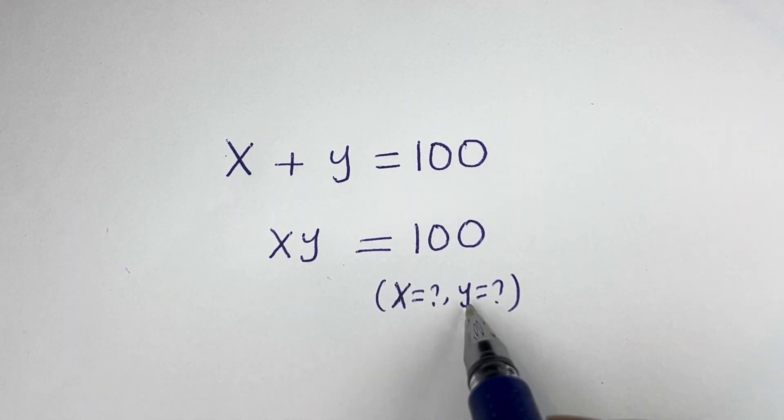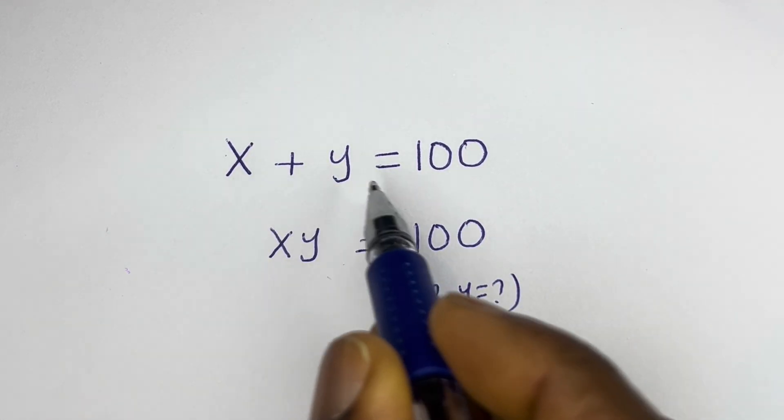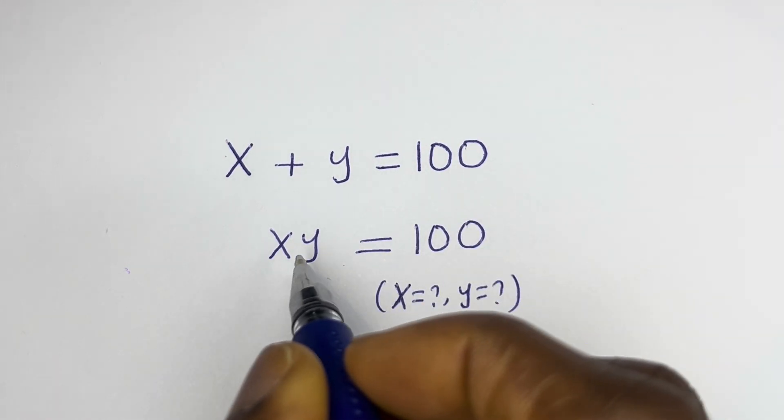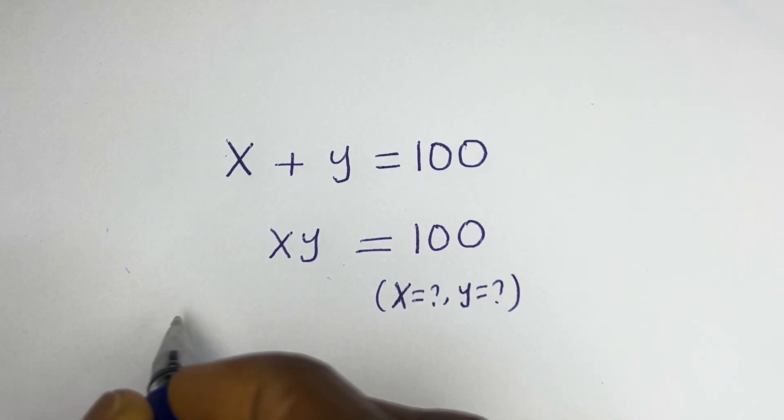Hello. How to solve for x and y in this equation: x plus y is equal to 100, and x times y is equal to 100.